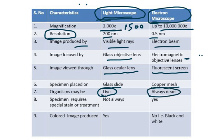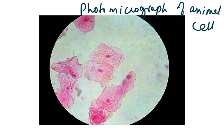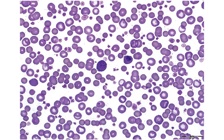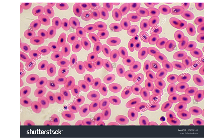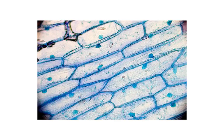For the electron microscope, the specimen requires special treatment because electrons must be beamed off it, and the color image is always black and white. Looking at examples: photomicrographs of an animal cell, blood cells (with plasma visible as space), cells with a nucleus like frog blood cells, and plant cells — all from the light microscope.